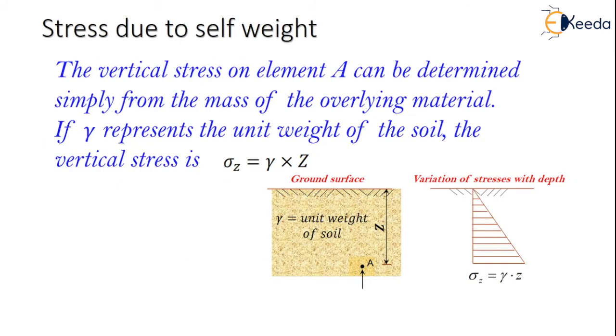What about stress due to self weight? The vertical stress on element A can be determined simply from the mass of the overlying material. If gamma represents the unit weight of the soil, the vertical stress is given by sigma Z is equal to gamma into the vertical distance Z. This is the variation of the stress with the depth. It increases from top to bottom.